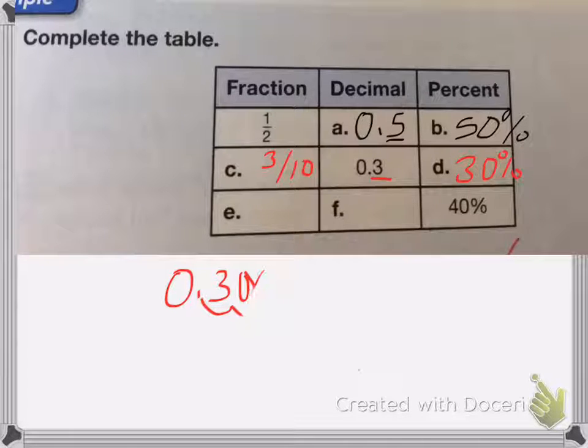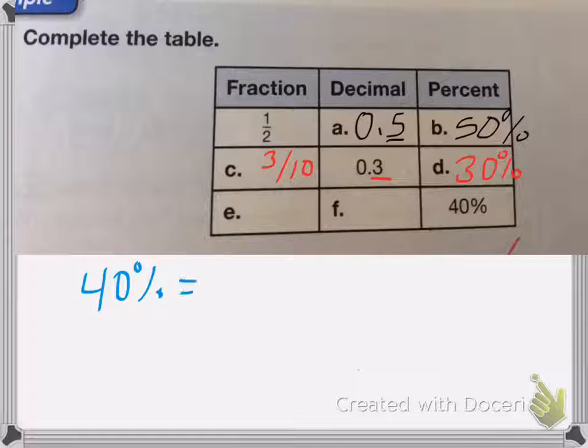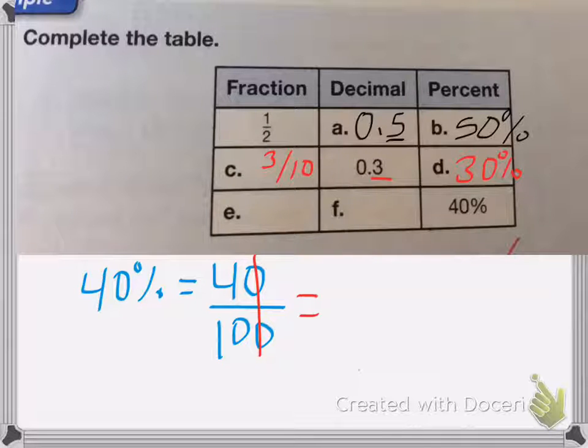All right, and the last one is it gives me the percent, 40%. And then you change that into a fraction and decimal. I know that 40% is equal to 40 per 100. I can now reduce, cancel the zeros, and that reduces down to 2 fifths.